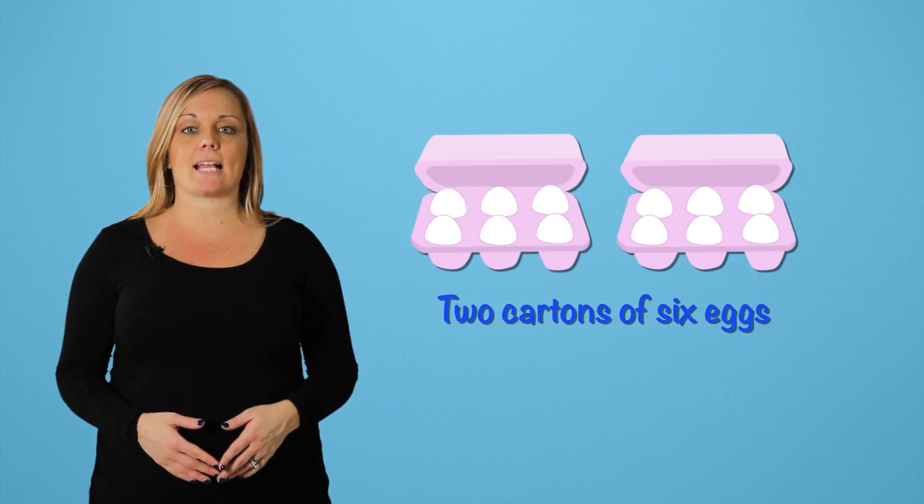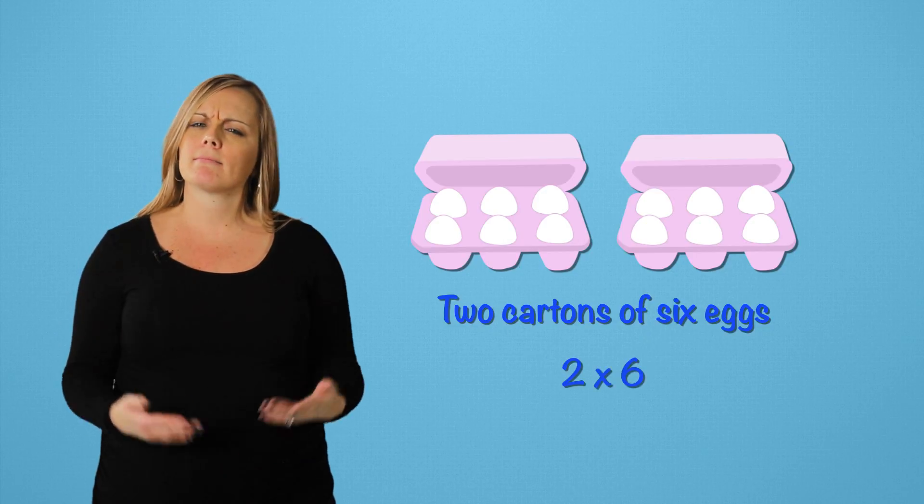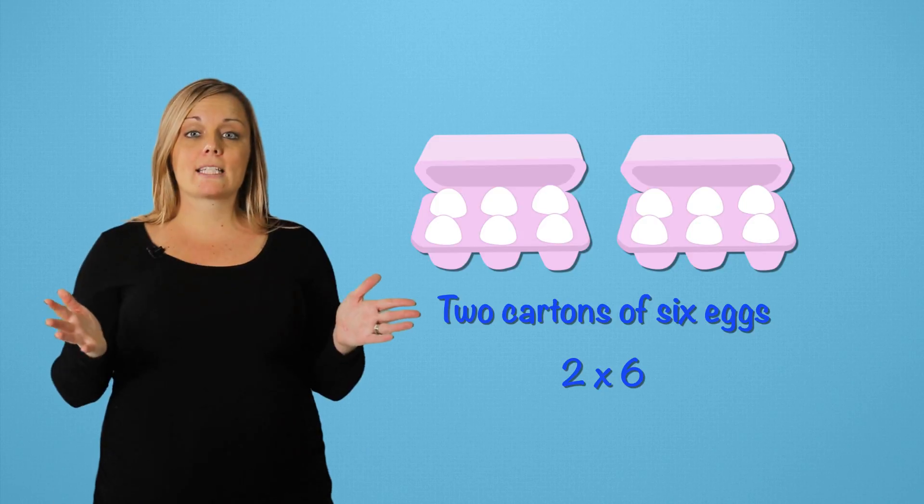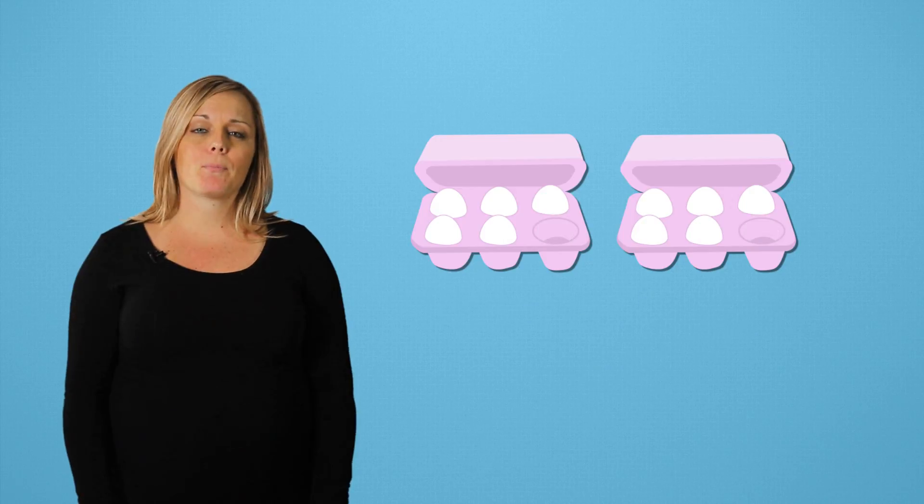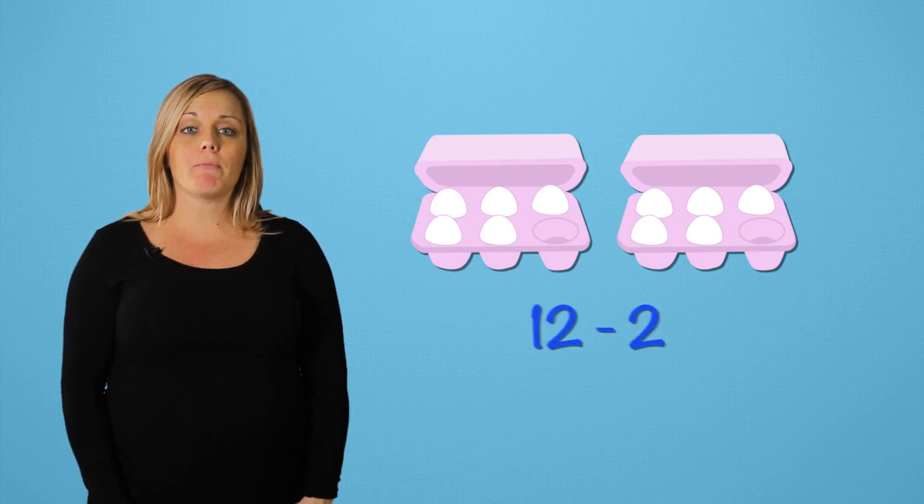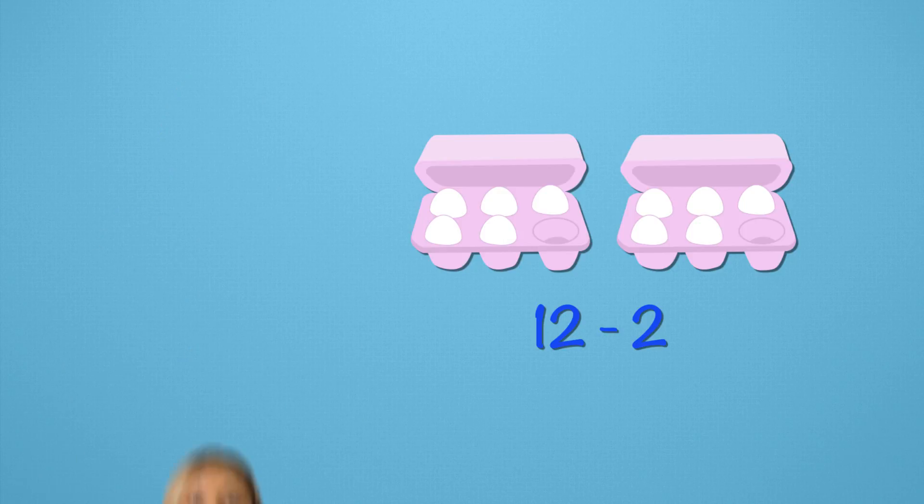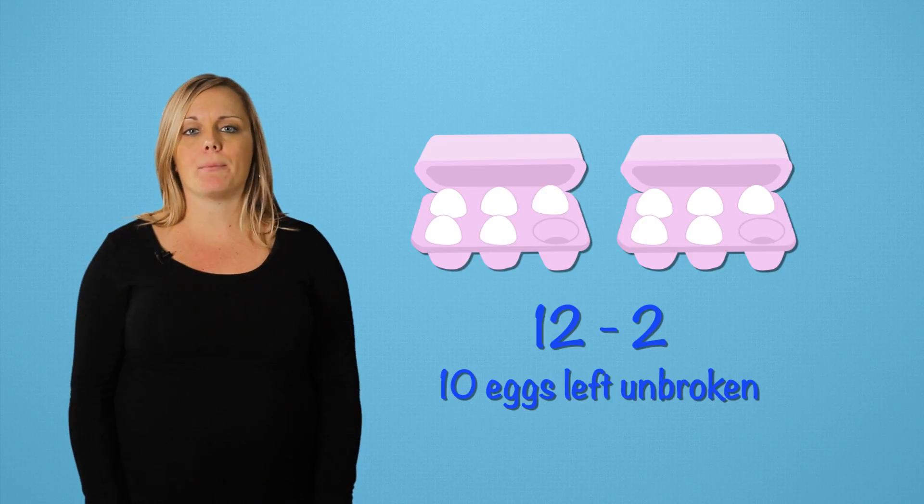So, we started with two cartons of six eggs. We can write that as two times six. How many eggs is that in total? Correct. But Richard was in such a rush that he dropped two of them. We can write that as 12 minus two. How many eggs are left unbroken? Very good. So, we have ten eggs left unbroken.